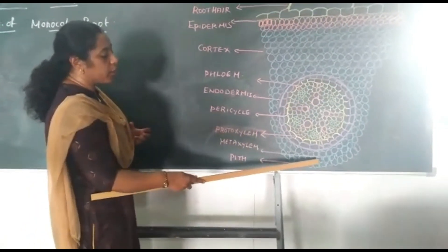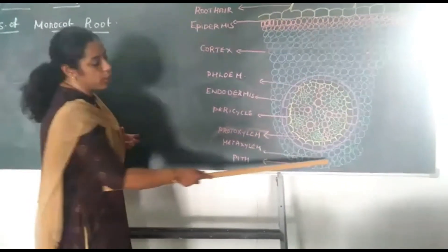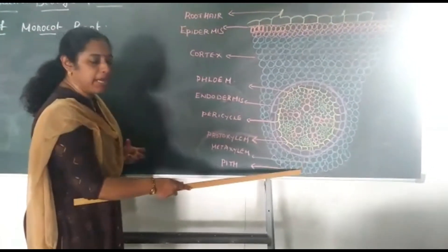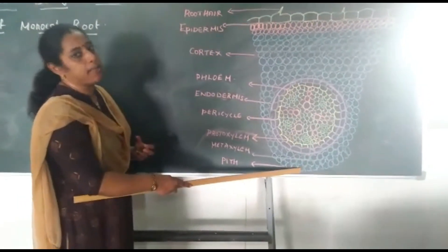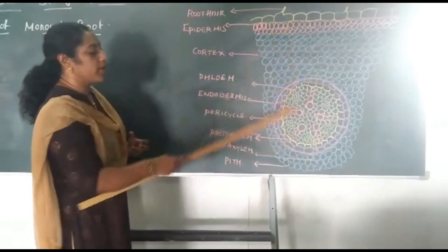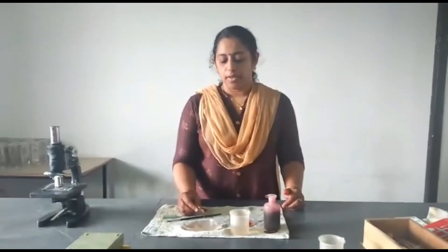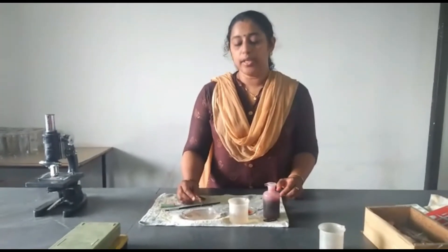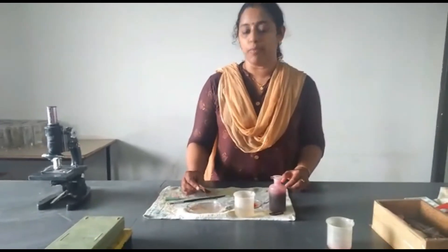Towards the center you can find the Pith. Pith is represented on the lower side and it consists of a number of parenchyma cells. This is about the anatomy of Monocot root. Students, we have completed the anatomy of Monocot root. Now I am going to tell you how to take the TS of Monocot root.